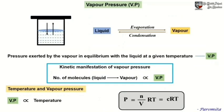Our first colligative property is relative lowering of vapor pressure. For that we should first know what is vapor pressure. Let us consider a liquid which is allowed to evaporate in a closed container — that means we will not allow the liquid molecules or vapor molecules to escape into the air.